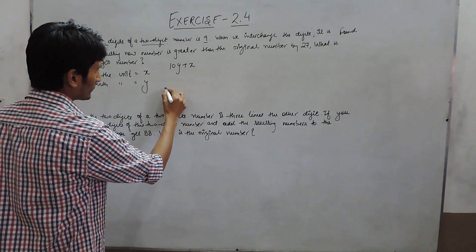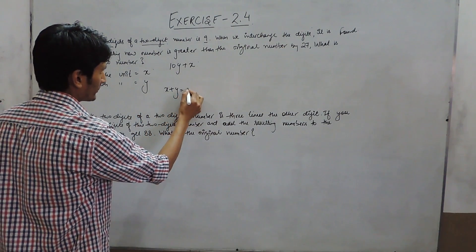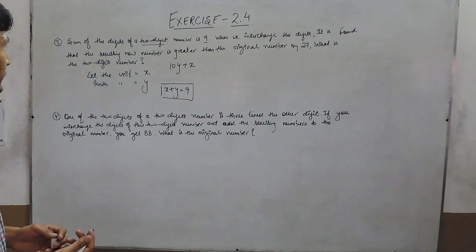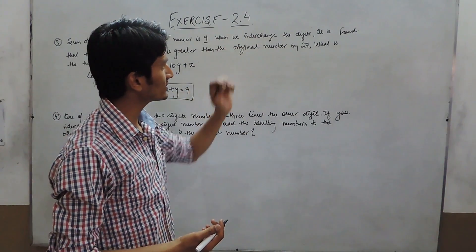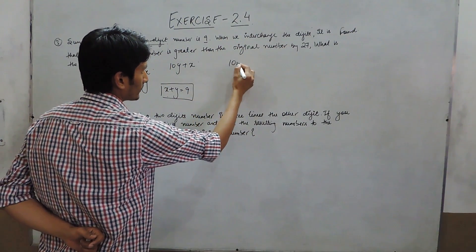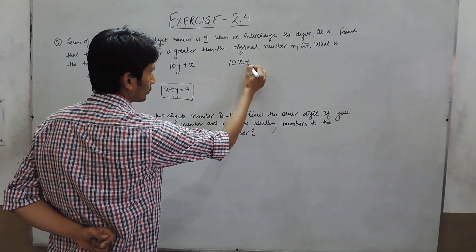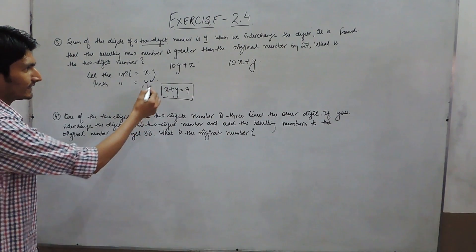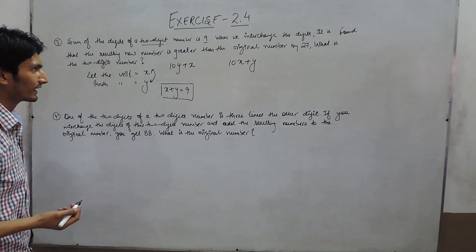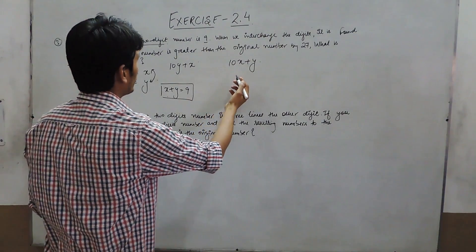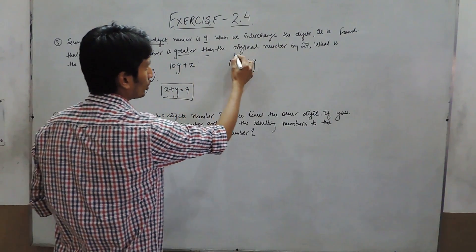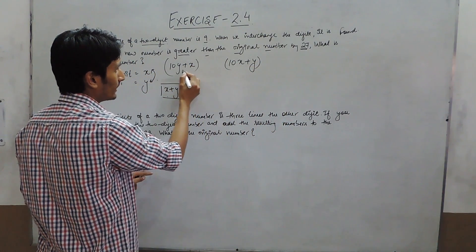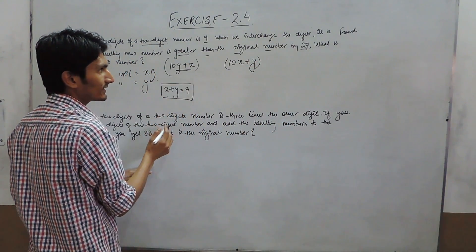We also know that the sum of digits is 9. It is also given that when we interchange the digits — meaning when the unit place acts as the tens place and the tens place acts as the unit place — the new number is greater than the original number by 27.